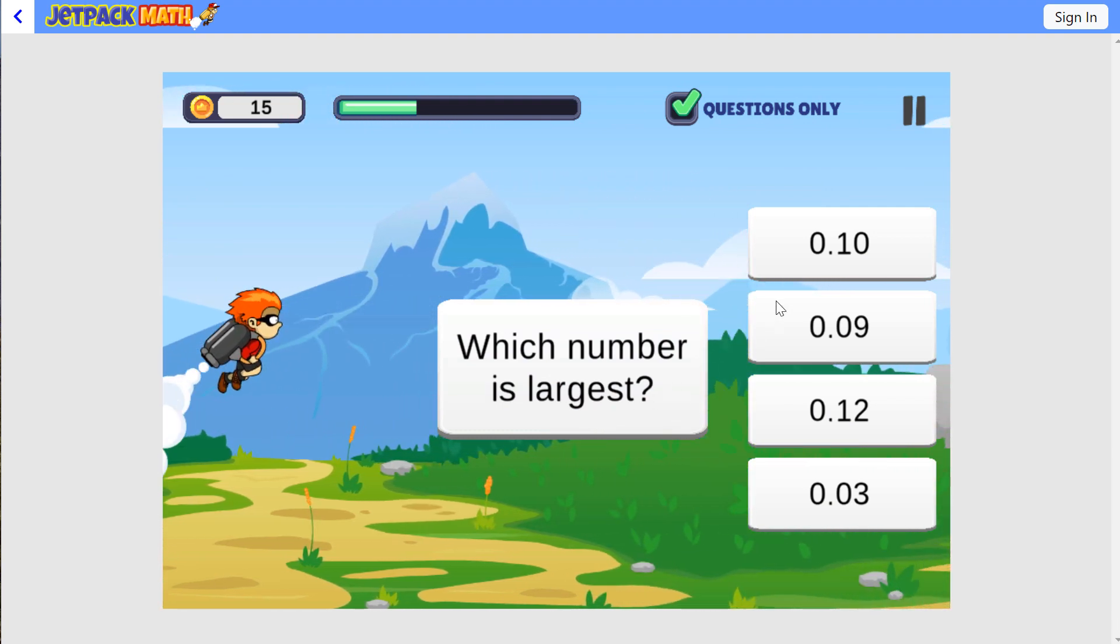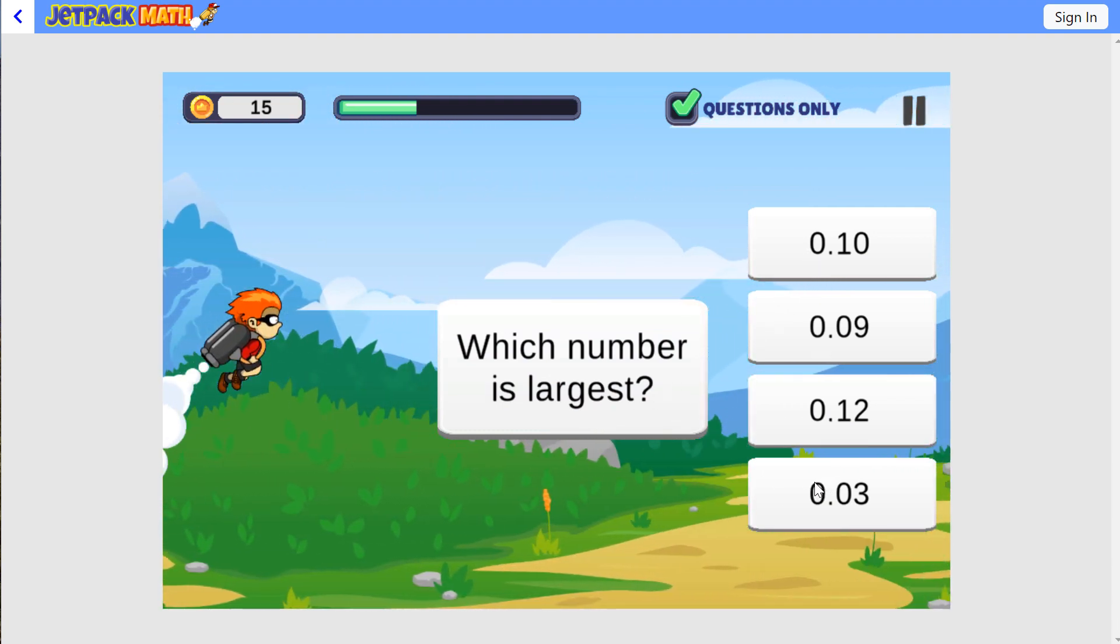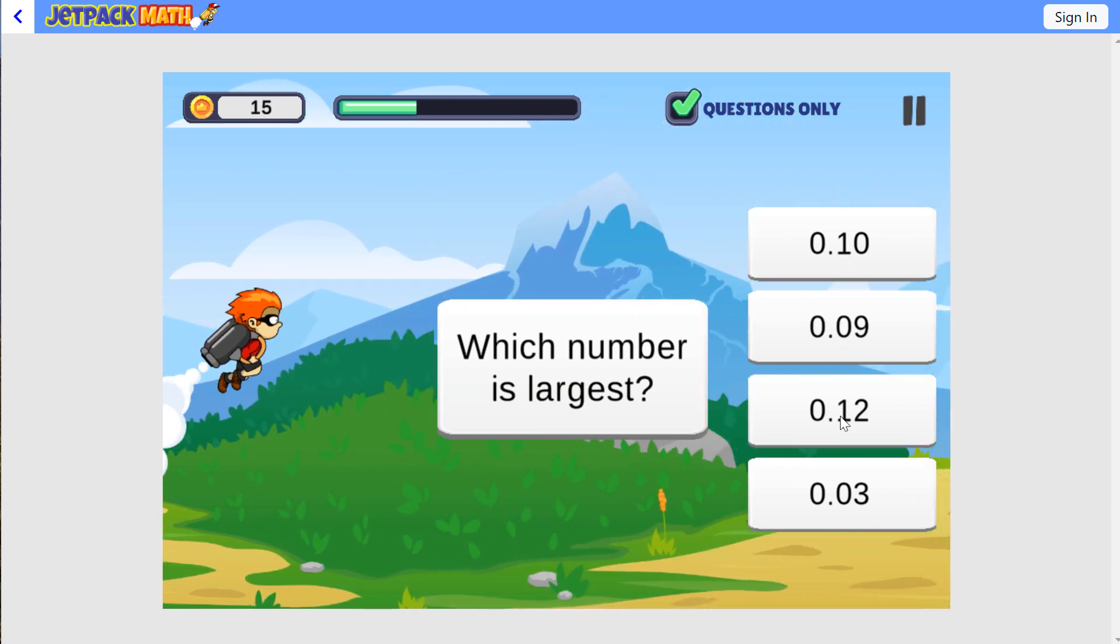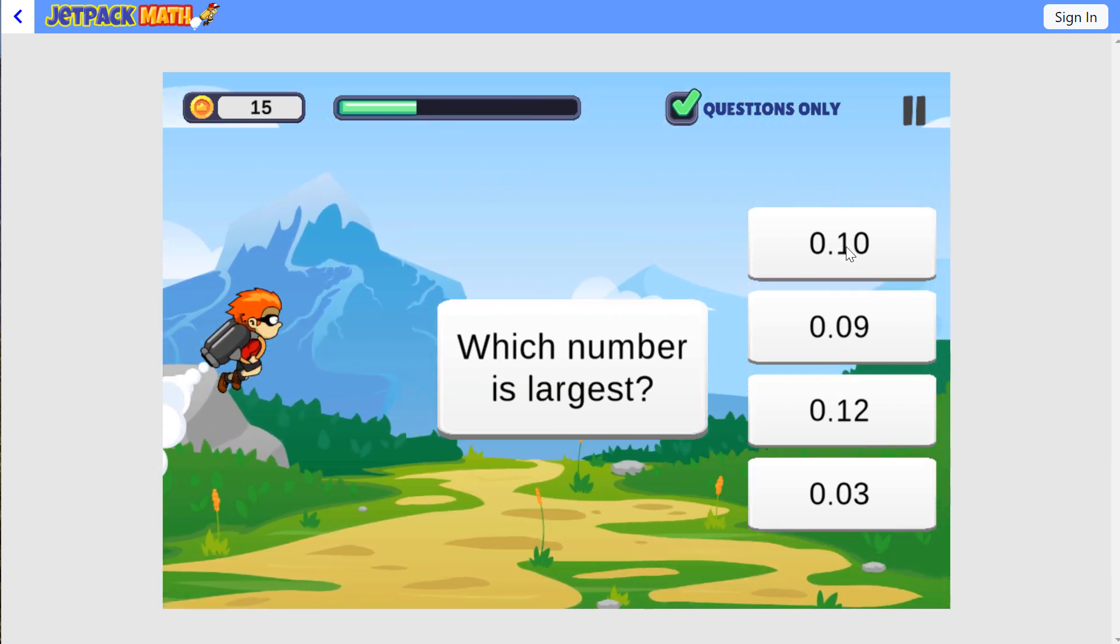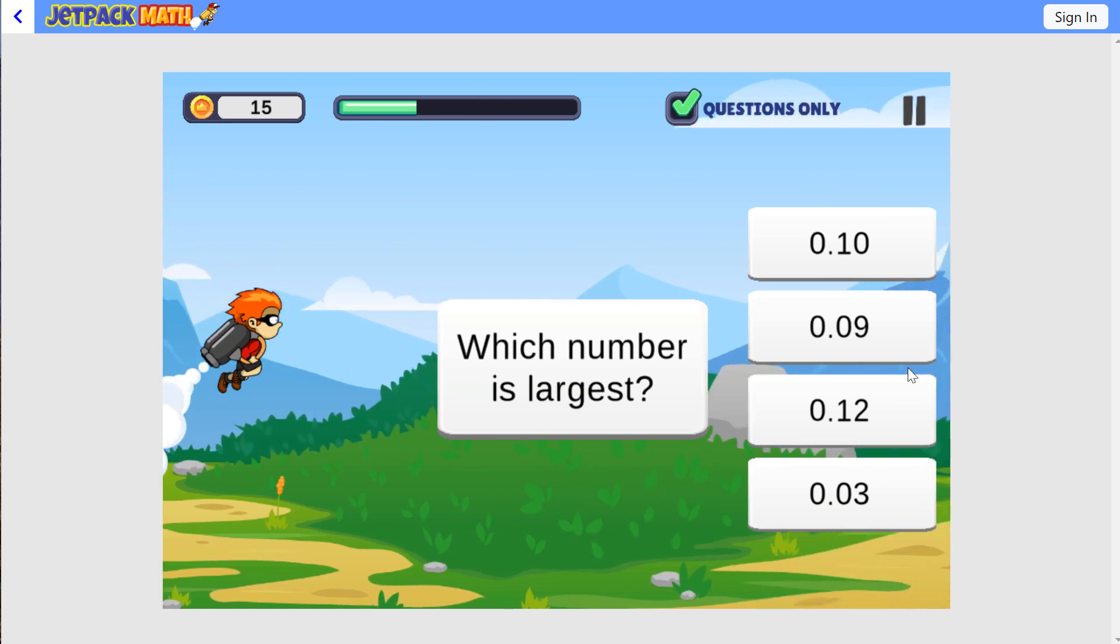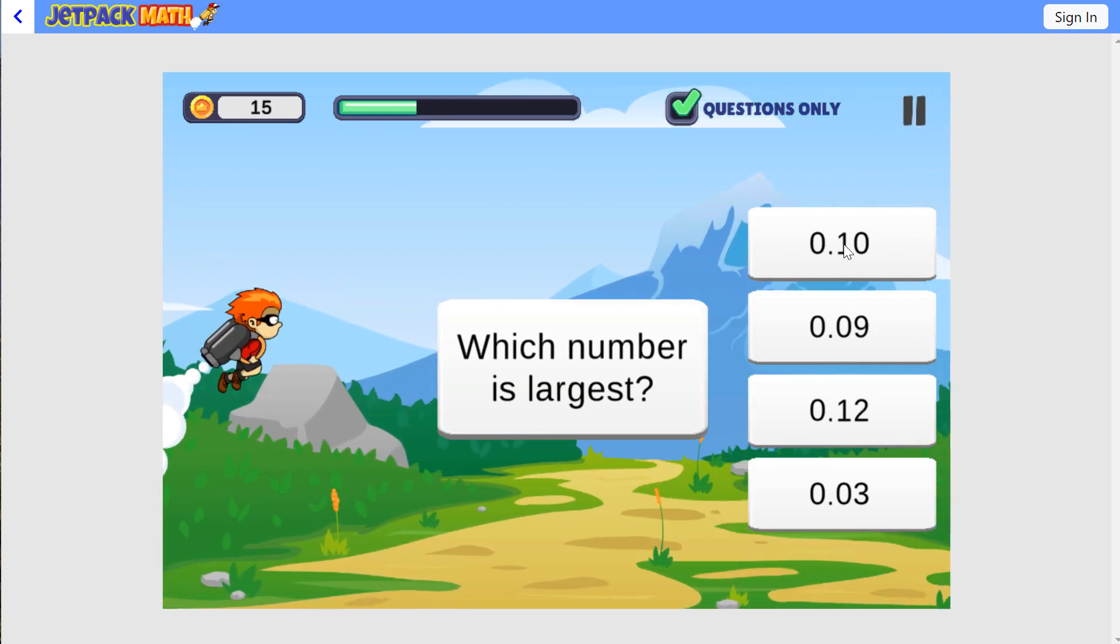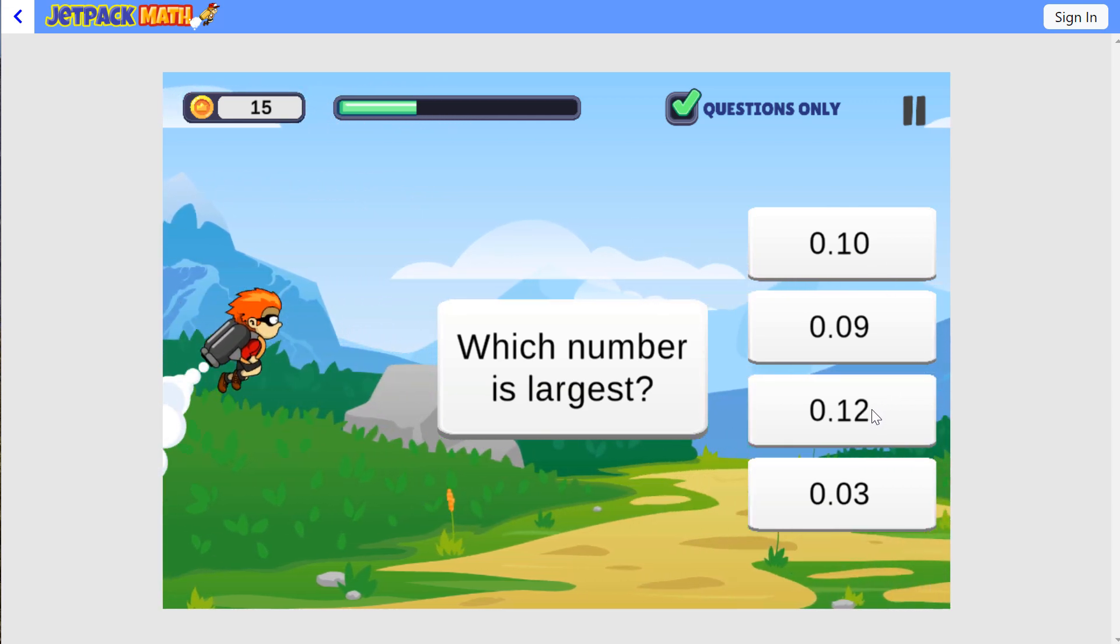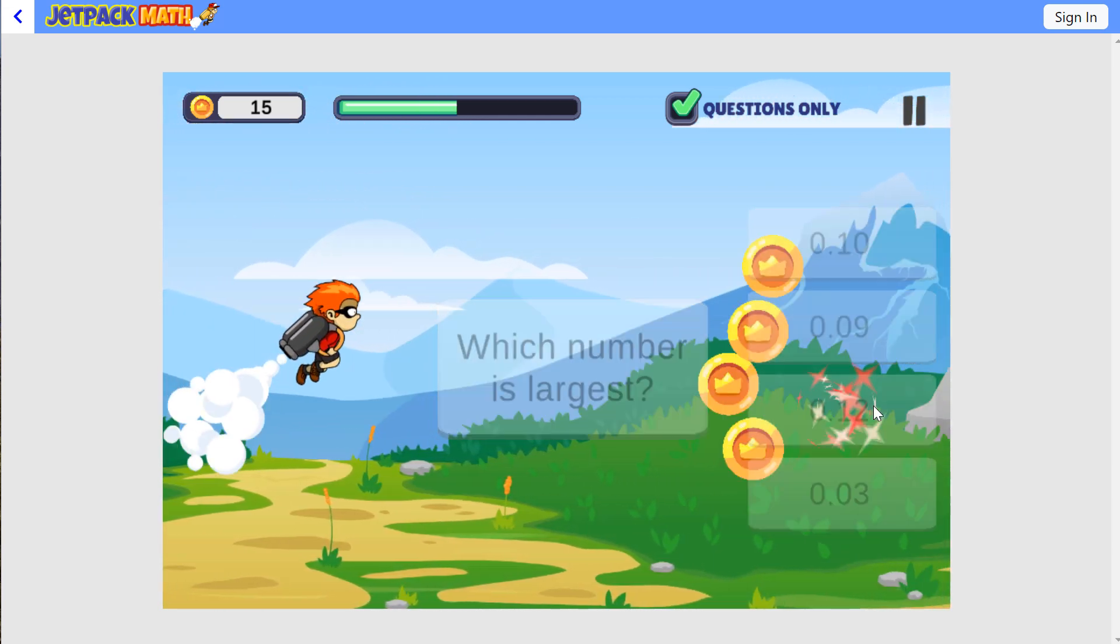Which number is largest? They all begin with zero. In the tenths place, we have a one, zero, one, zero. So we know it's going to be one of the ones with a one, either this one or the third one. We look at the hundredths place, and we get a zero and a two. The two is larger, so this is our answer.